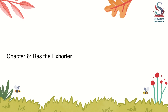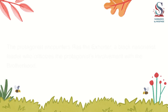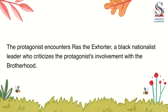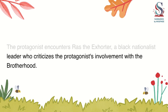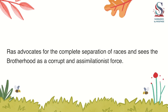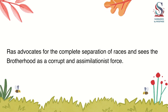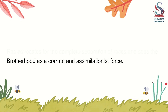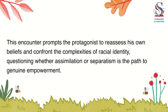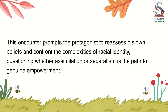Chapter 6: Ras the Exhorter. The protagonist encounters Ras the Exhorter, a black nationalist leader who criticizes the protagonist's involvement with the Brotherhood. Ras advocates for the complete separation of races and sees the Brotherhood as a corrupt and assimilationist force. This encounter prompts the protagonist to reassess his own beliefs and confront the complexities of racial identity.